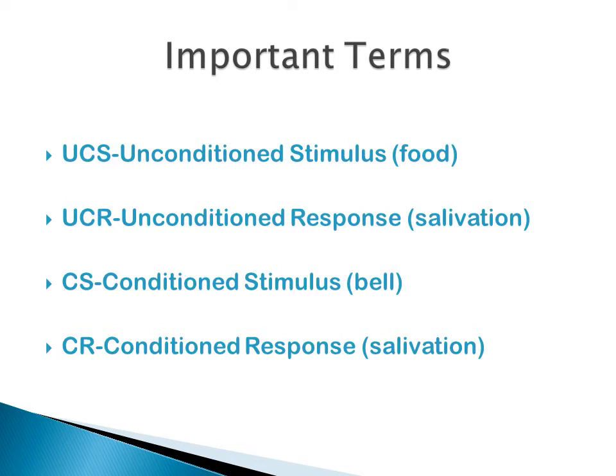There are certain terms to explain with respect to the experiment. First is the unconditioned stimulus. When we put food in the mouth of the dog, the dog salivates. This response to food is natural and unfailing — food is called the unconditioned stimulus, and the salivation by the dog is called the unconditioned response. The stimulus food is called unconditioned because the response depends upon no special condition. An unconditioned response is unlearned and implies no preconditioning.